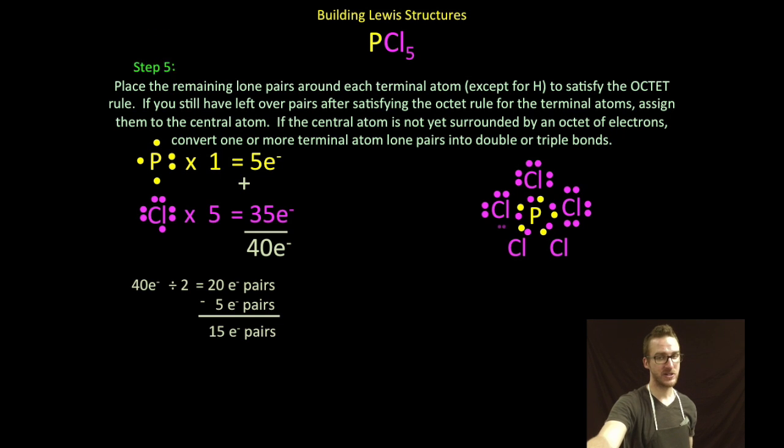I'm going to give three pairs of electrons to each of my chlorines so that they each have an octet. In so doing, I use 15 pairs of electrons and I have no electron pairs left over.